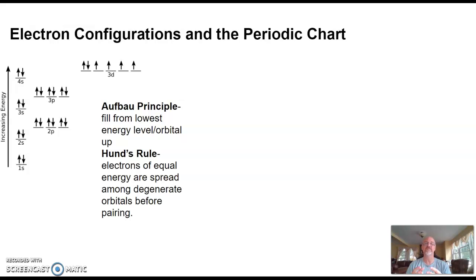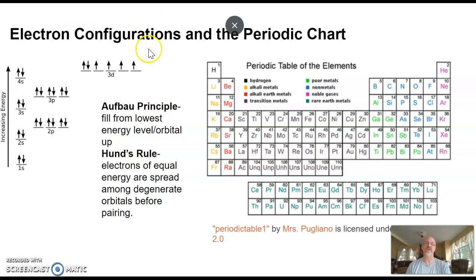When we look at the periodic chart, the periods correspond to the primary energy levels 1 through 7. The first two columns correspond to elements whose valence shell has an s orbital, so it's the s orbital electrons that are determining the behavior.